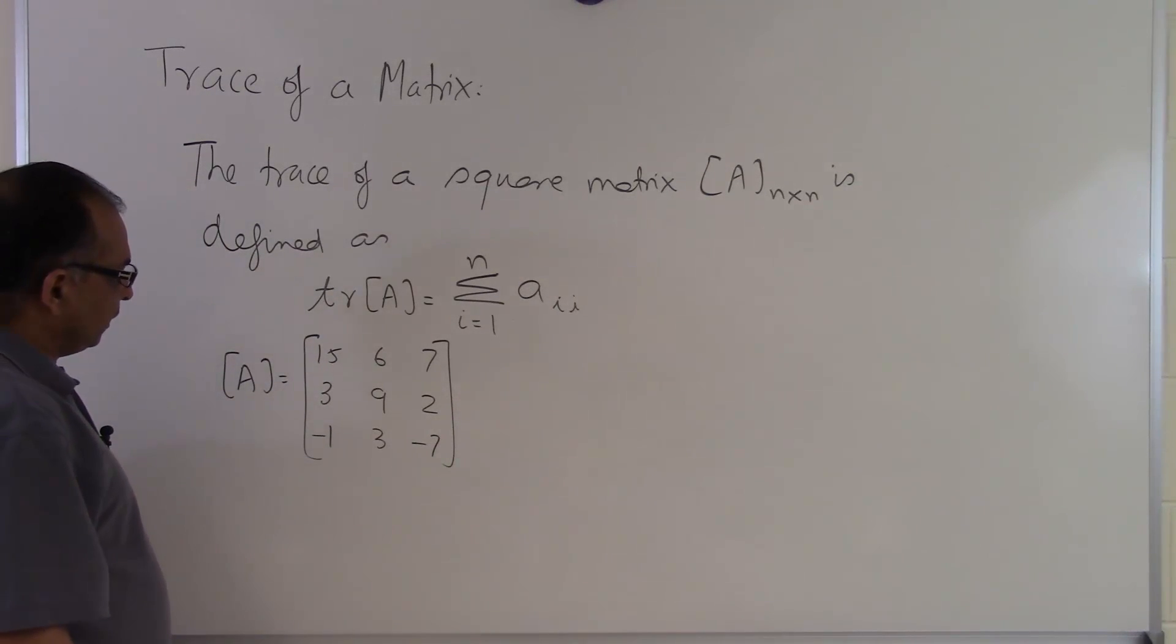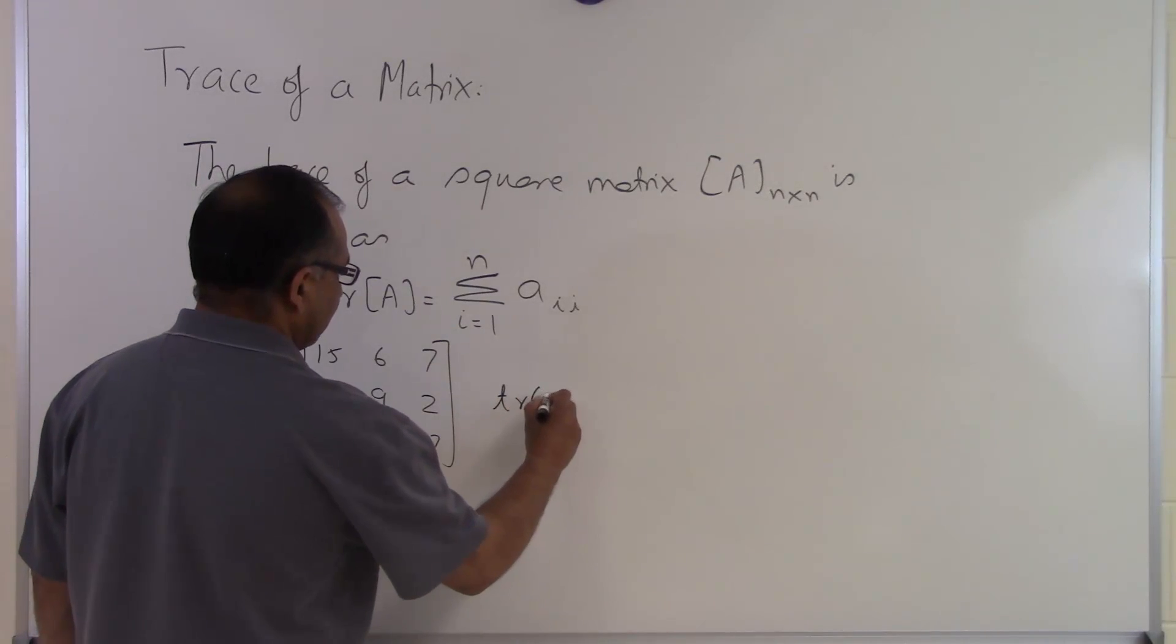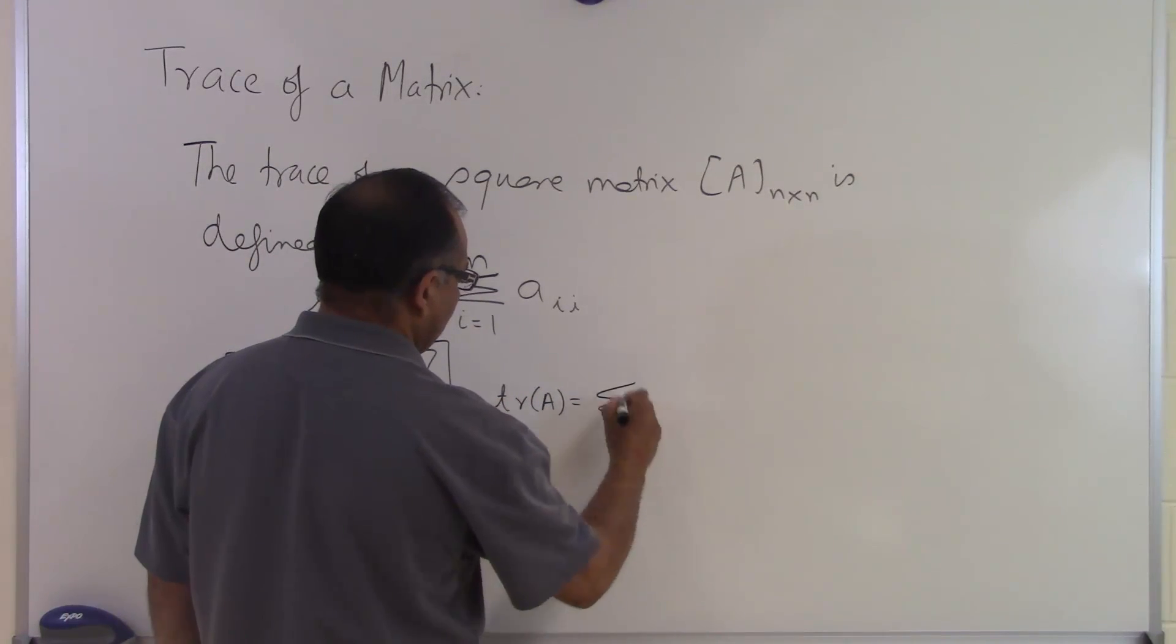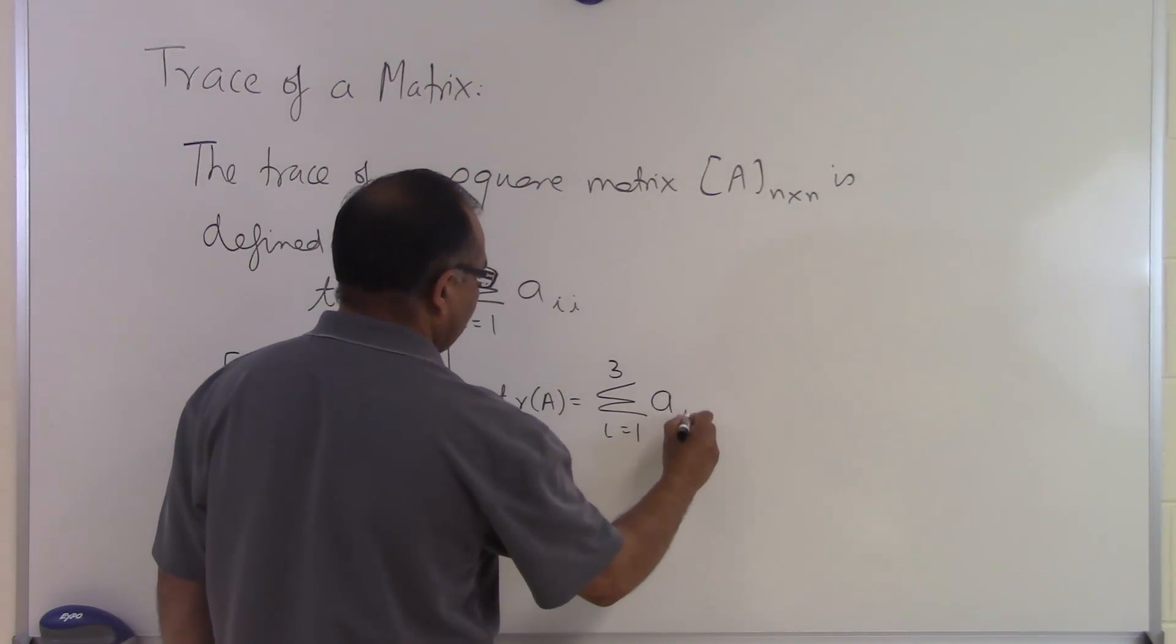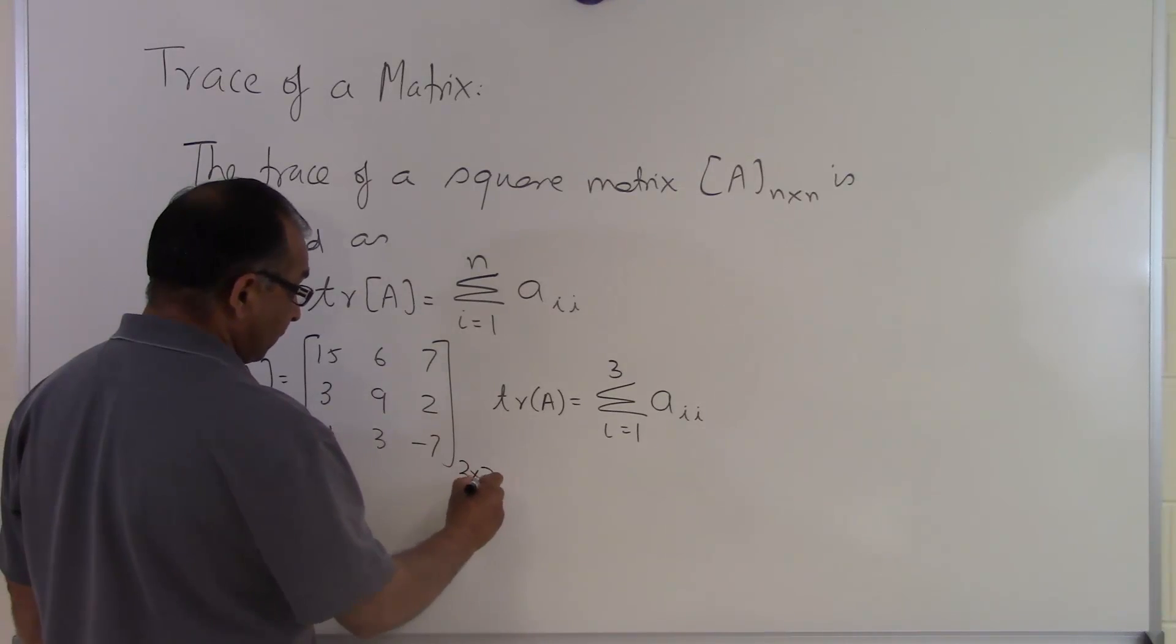So if that's the A matrix and somebody says, find out the trace of this matrix, I'll say trace of A is summation i equals 1 to 3 of A_ii, because we have 3—the size of this matrix is 3 by 3.